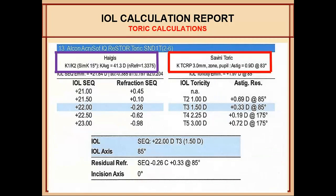In the toric calculation, Haag's formula uses the average K from SIMK for the IOL power, while the TCRP is used for the toricity calculation. You use the regular K to calculate the power of the implant, and you take the toricity from the total corneal refractive power. It used to require a lot of manual work; now the machine gives it automatically. For this patient, using a toric implant, I end up with a 22 diopter T3.